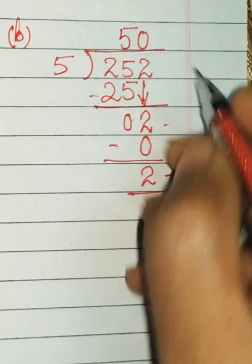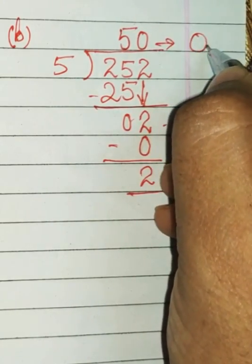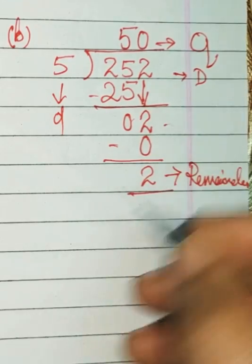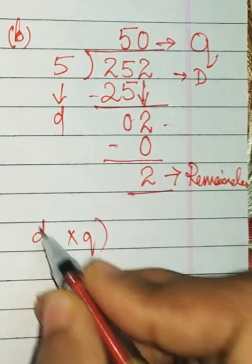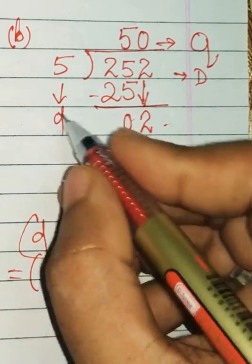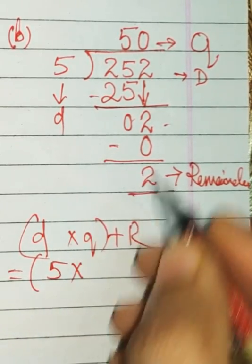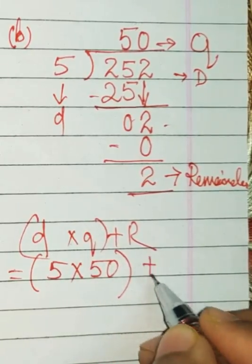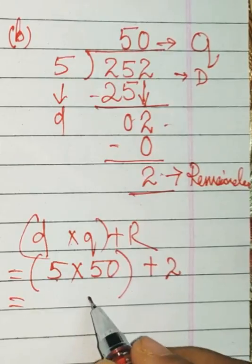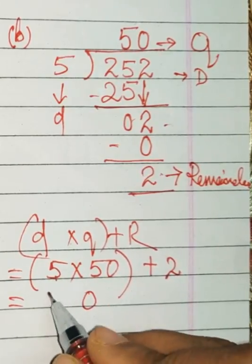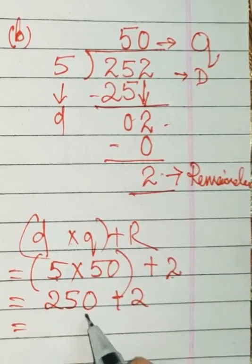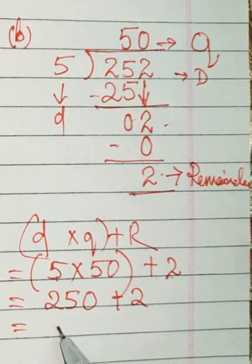We will go for checking now. D into Q plus R, let's do it. This D is 5 into quotient is 50 plus remainder is 2. Let's check: 5 zeros are 0, 5 fives are 25, so 250, then plus remainder 2.